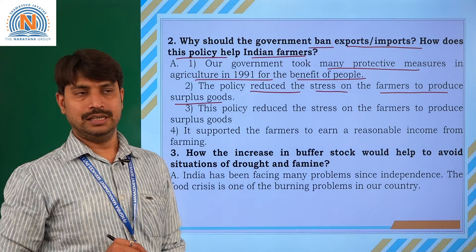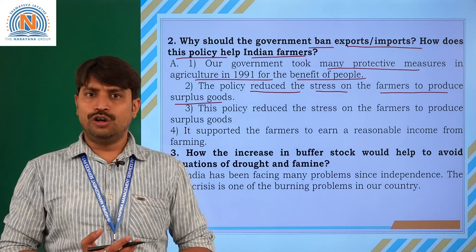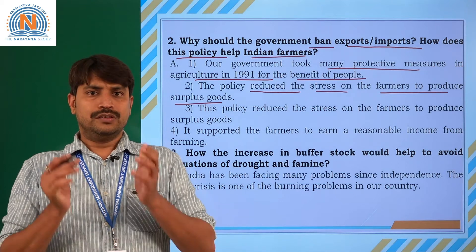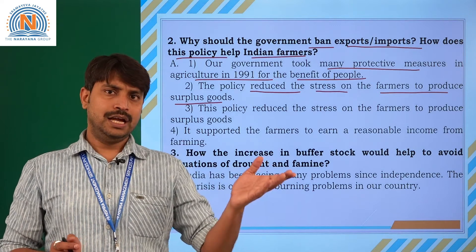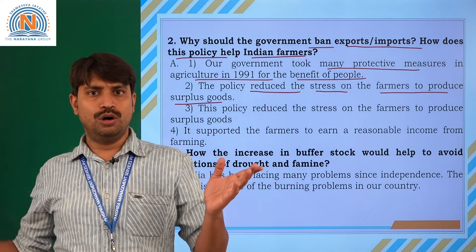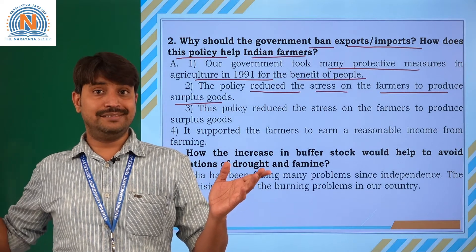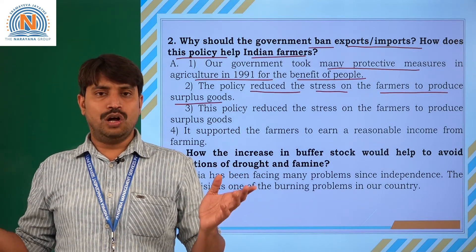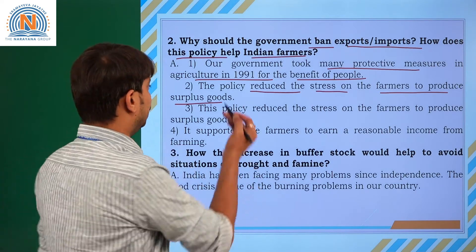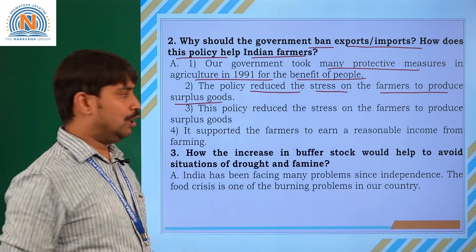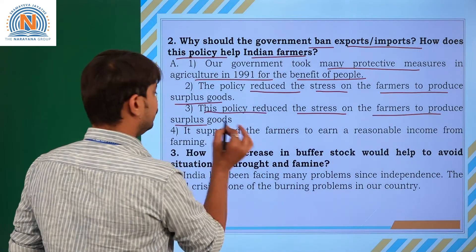What is the meaning of surplus here? For example, a farmer has cultivated about a thousand kilos of rice. He is going to sell 500 kilos of rice to the market and the remaining 500 are stored for the next utilization. We call the storing of such products as surplus. The surplus methods are also provided by the government.